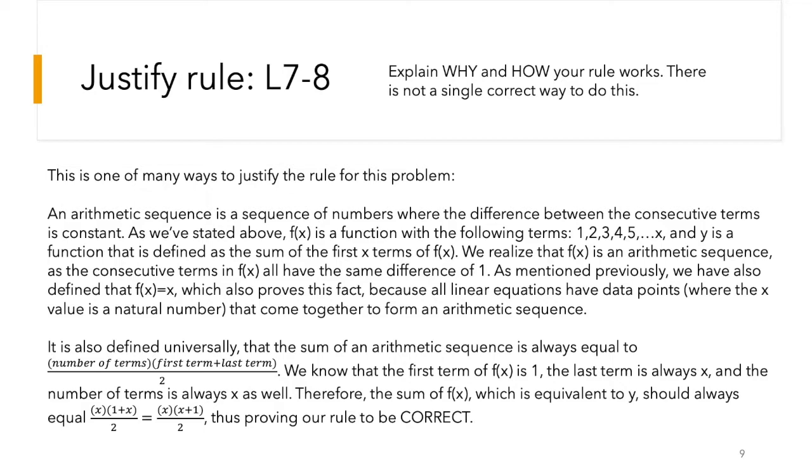So y should always equal the number of terms in f(x) multiplied by the first term of f(x) and the last term of f(x) divided by 2. So we know that the first term of f(x) is 1, and the last term is always x. Of course, depending on what figures you're on, that last term is constantly changing. But of course, x is a variable, so that makes sense. And the number of terms is always x as well. Therefore, the sum of f(x), which is equivalent to y, should always equal, as you can see on the screen, x times (1 plus x) divided by 2. So that proves the rule is correct.